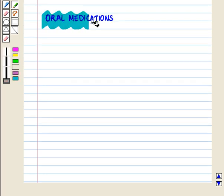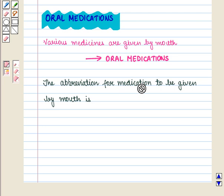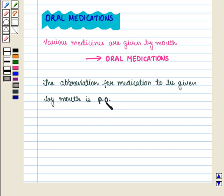Now we are going to discuss oral medications. Various medicines are given by mouth and these are called oral medications. The abbreviation for medication to be given by mouth is P.O., which is an abbreviation of the Latin phrase 'per os,' which means 'by mouth.'